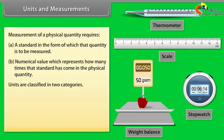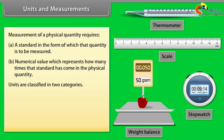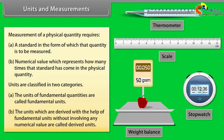Units are classified in two categories: A) Fundamental units, and B) Derived units. The units of fundamental quantities are called fundamental units. The units which are derived with the help of fundamental units without involving any numerical value are called derived units.